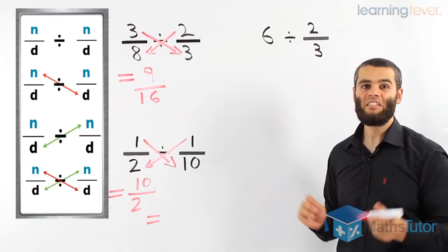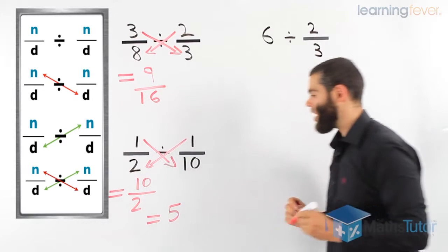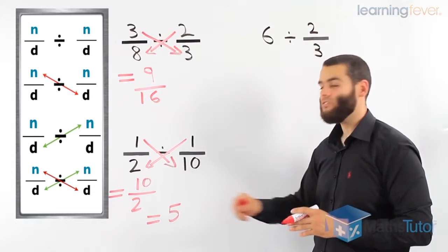10 over 2 is 10 divided by 2, so our answer is actually a whole number. Our answer is 5, so a half divided by 1 over 10 is actually 5.